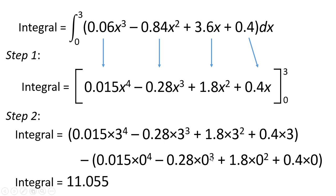So when we work this out, we get 11.055, and that's the area between x equals 0 and x equals 3 for this particular function.